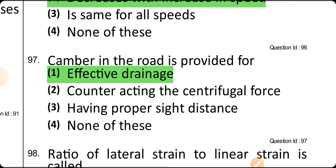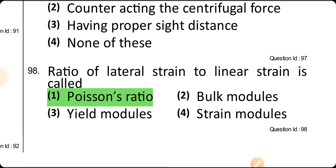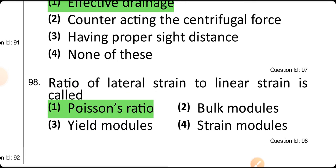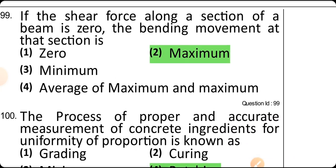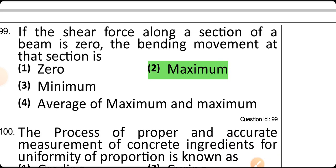Camber in a road is provided for effective drainage. The ratio of lateral strain to linear strain is Poisson's ratio. If the shear force along a section of a beam is zero, the bending moment at that section is maximum.